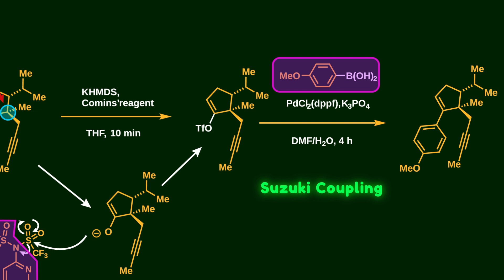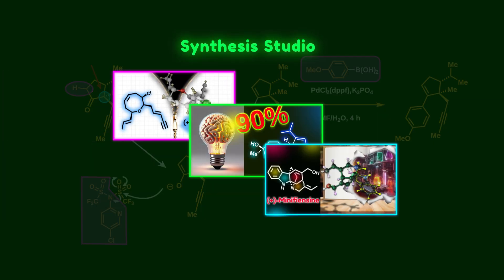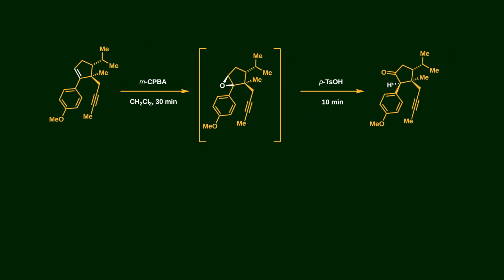The next step is Suzuki coupling, where commercially available 4-methoxyphenylboronic acid is coupled to the vinyl triflate using palladium. If you want to go deeper into the basics like cross-coupling reactions or how chirality is induced, check out the Synthesis Studio series, where I break down the core concepts in detail and explain how they are applied in real synthetic procedures.